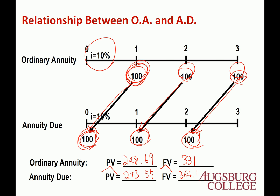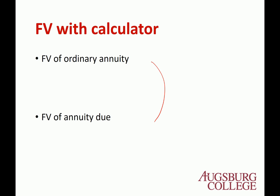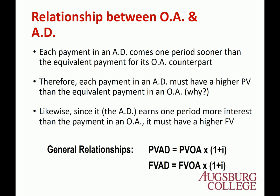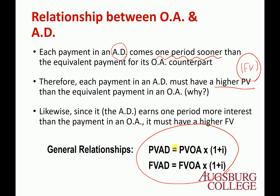The only difference between the two cash flows is timing — Annuity Due dollars are always earlier, so Annuity Due always has greater value than Ordinary Annuity. Each payment comes one period sooner and therefore has a higher present value and higher future value. The general relation is: PV of Annuity Due equals PV of Ordinary Annuity times (1 + interest rate), and FV of Annuity Due equals FV of Ordinary Annuity times (1 + I).